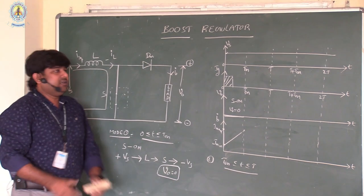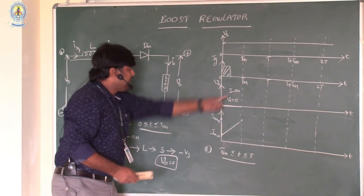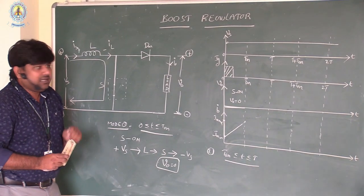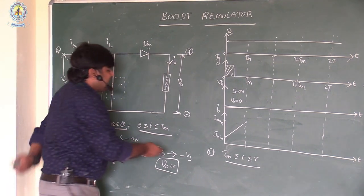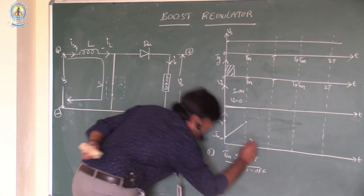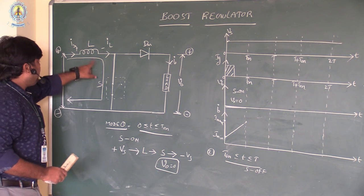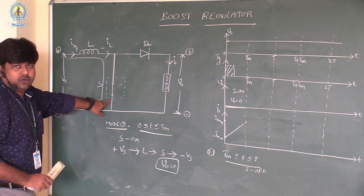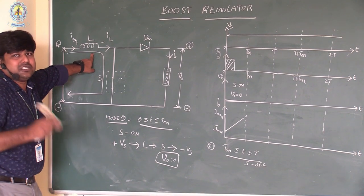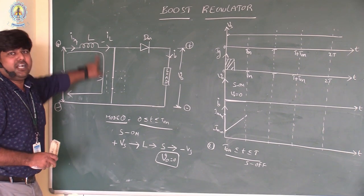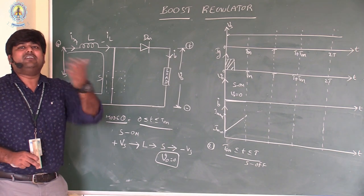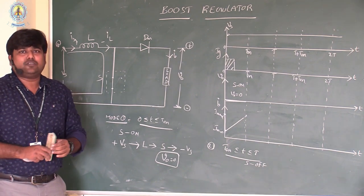Mode 2 covers T-on less than T less than T. When the current reaches maximum, the gate pulse is removed and the switch turns off — S is off. Up until Mode 1, the inductors were charging. Now the inductor acts as a source, and according to the magnetic property of inductance, energy is delivered from the inductor to the load.